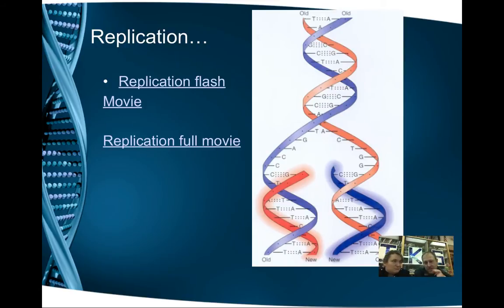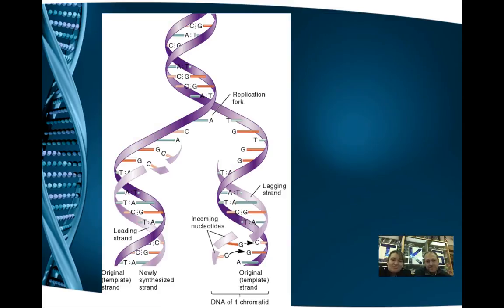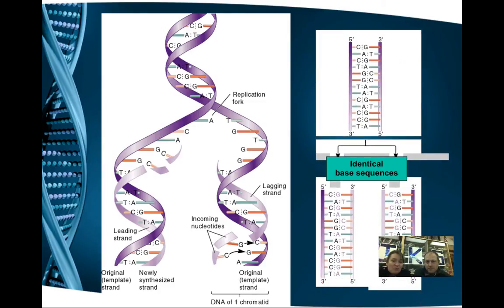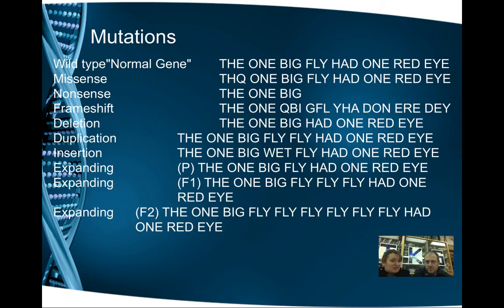If there are any errors — even just one base pair off in replication — things get messed up. Sometimes it's good and sometimes it's bad. There are a lot of different types of mutations: one section can be copied twice or accidentally left out — deletions, frame shifts. It creates all kinds of crazy stuff. It's like if you read a sentence and one letter changes — you can pause and read through the examples to see how it changes.